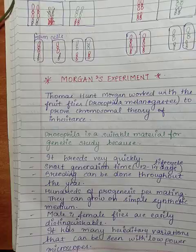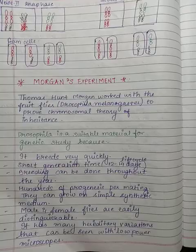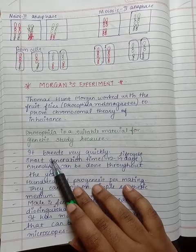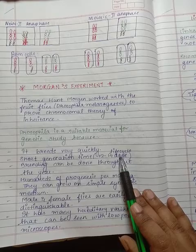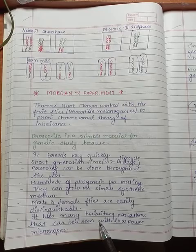Now we come to Morgan's experiment. Thomas Hunt Morgan worked with the fruit flies, Drosophila melanogaster, to prove the chromosomal theory of inheritance. Drosophila is suitable material for genetic study because it breeds very quickly - short generation time of 12 to 14 days life cycle, breeding can be done throughout the year, hundreds of progenies per mating, they can grow on simple synthetic media, male and female flies are easily distinguishable, and it has many hereditary variations that can be seen with low power microscopes.